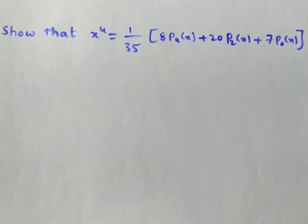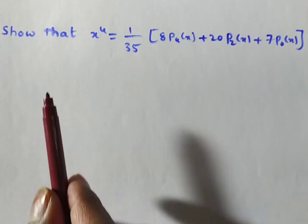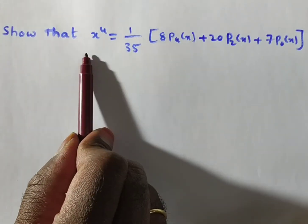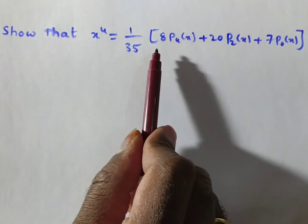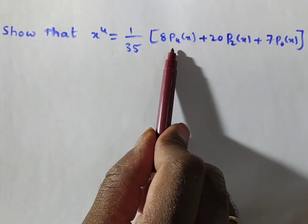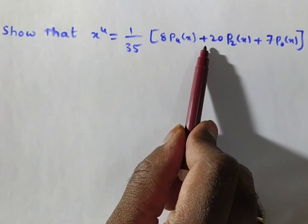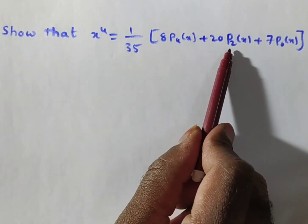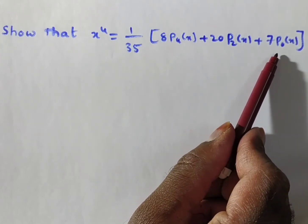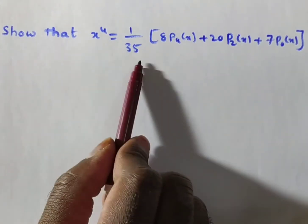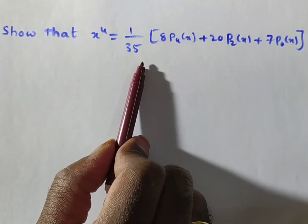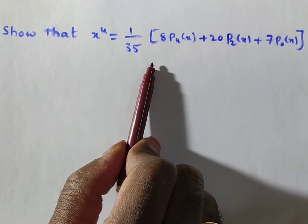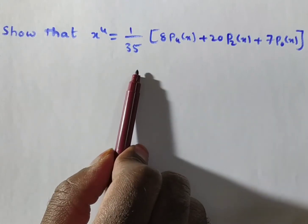Hi friends. In this video we are discussing an application of Legendre polynomials — specifically, we are showing that x to the power of 4 equals (1/35) times (8P₄(x) + 20P₂(x) + 7P₀(x)). We are proving this in this video. This topic is chosen from Legendre polynomials in the subject of special functions.